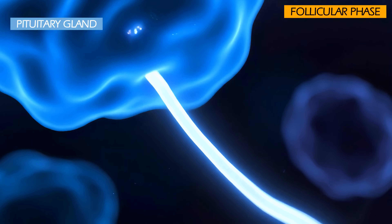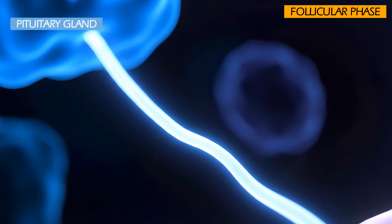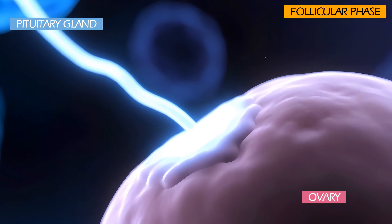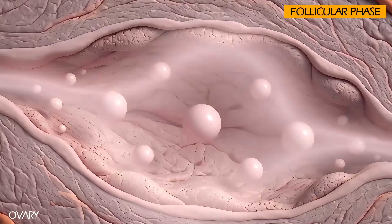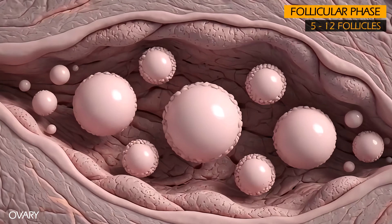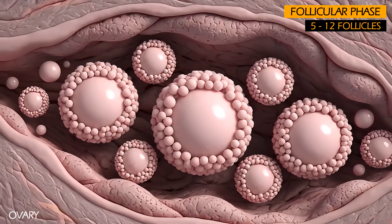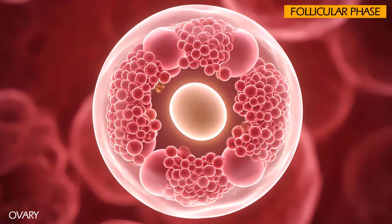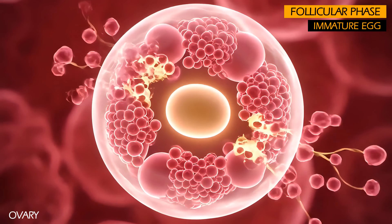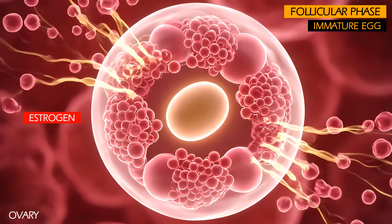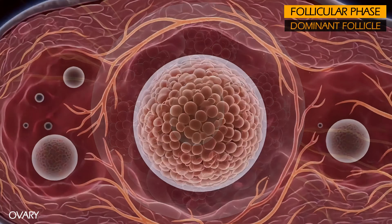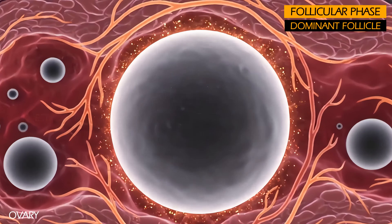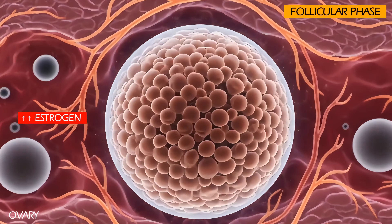At the same time, the pituitary gland starts to send follicle-stimulating hormone, FSH, to the ovaries. This hormone stimulates the development of 5 to 12 follicles in the ovaries. Each follicle contains an immature egg that produces estrogen hormone. This is called the dominant follicle. As this follicle grows, the levels of estrogen in the blood rise significantly.